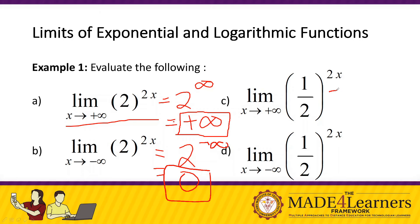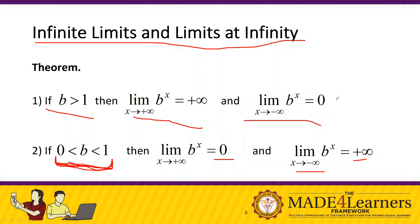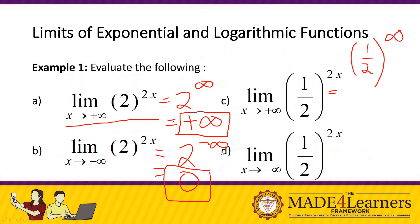For C, we have 1/2 raised to the power of 2x as x approaches positive infinity. This gives us 1/2 raised to the power of 2 times infinity, which is positive infinity. Take note: 1/2 is less than 1 because 1/2 is 0.5. What is 0.5 raised to the power of infinity? If the base is less than 1, the answer is 0.